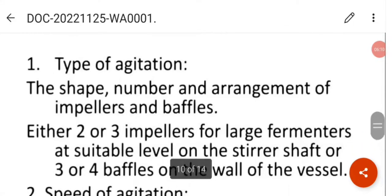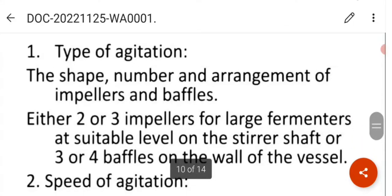Oxygen supply is affected by the following: type of agitation, shape, number and arrangement of impellers and baffles. Either two or three impellers for the large fermenters at suitable level on the stirrer shaft or three or four baffles on the wall of the vessel.